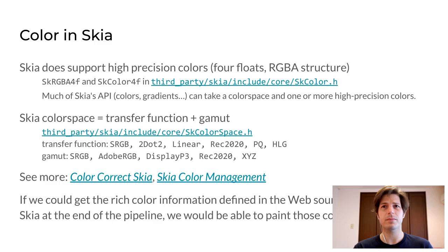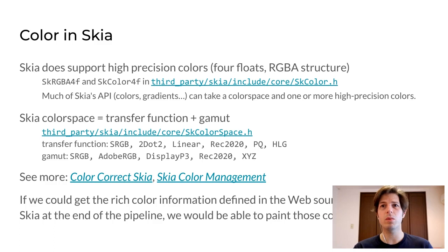This means that if we manage to get that rich color information defined in the web sources at the beginning of the pipeline all the way to Skia at the end of the pipeline, we would be able to paint those colors correctly on the screen — so that would be our first goal. There are a couple of things worth mentioning here. First, Skia's representation of high precision colors still uses an RGBA structure, so out of the box Skia does not support other formats like LAB. Secondly, the CSS color spec provides ways to specify the interpolation color space for gradients, transitions, etc. Blink relies on Skia for this, but Skia will always use the color space where the source colors have been defined and does not support interpolating in a different space.